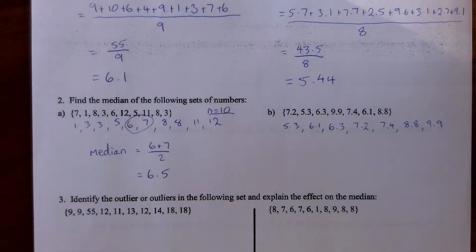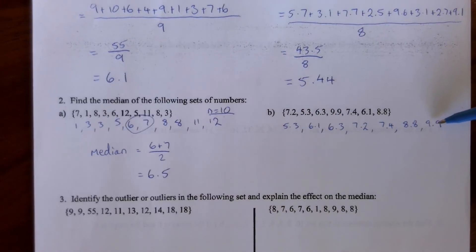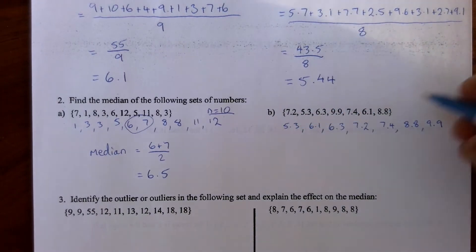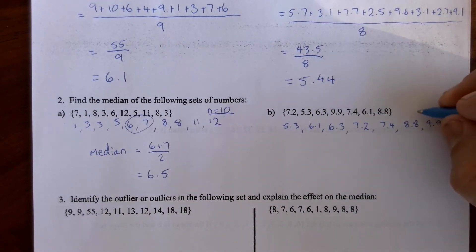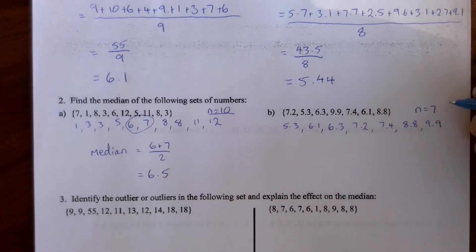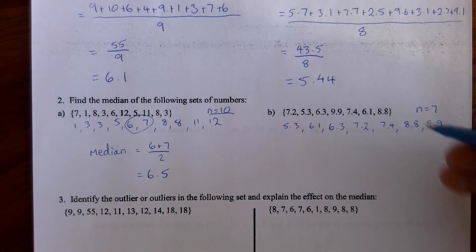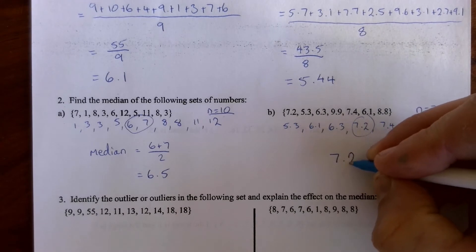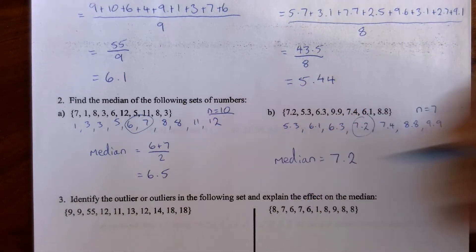Question 2b also asks for the median. The numbers are already arranged in ascending order. This time there are 7 scores, which is an odd number, so unlike 2a there is only one median score — the fourth one. This gives a median of 7.2.